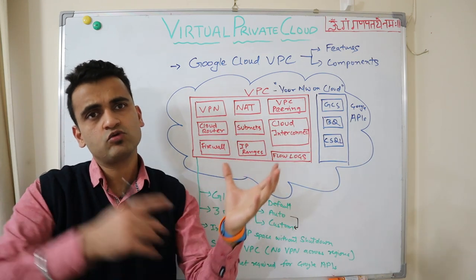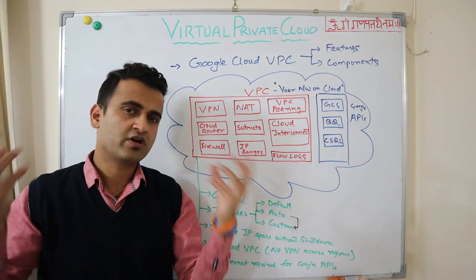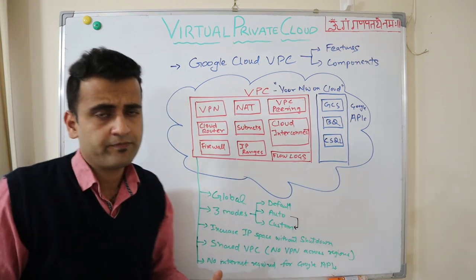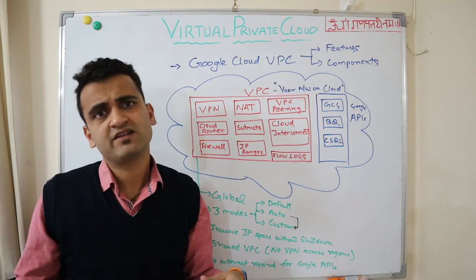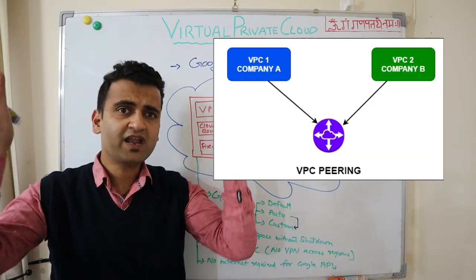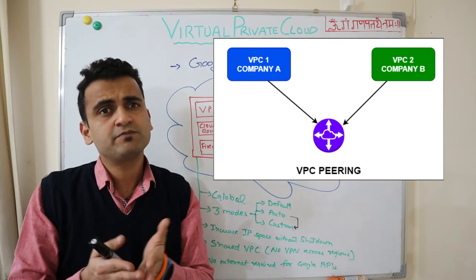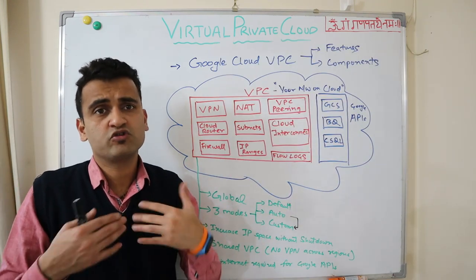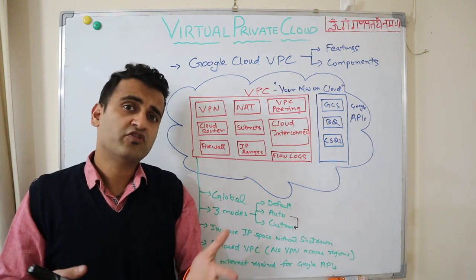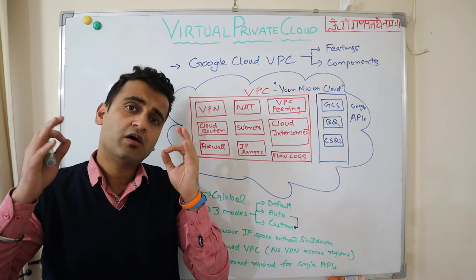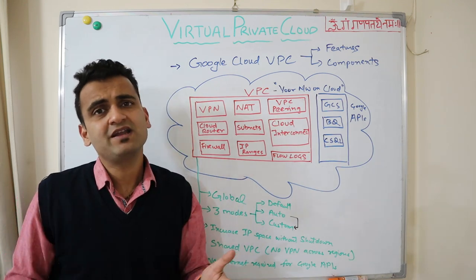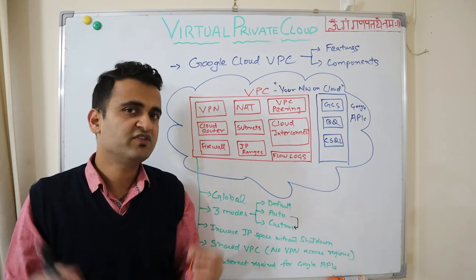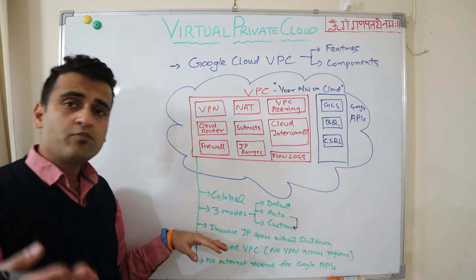Suppose company A supplies data to company B. Both are completely different organizations that exist within Google Cloud, but one has VPC network A and the other has VPC network B. In that case you can use VPC Peering, and from a speed and bandwidth perspective it will be as good as having a Shared VPC. Underlying both concepts — Shared VPC or VPC Peering — you are using the same Google infrastructure, so both are equivalent and you get optimal performance.